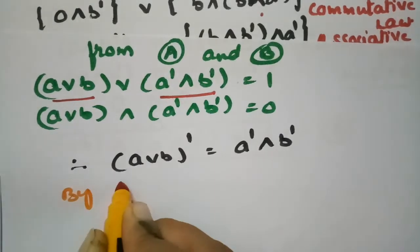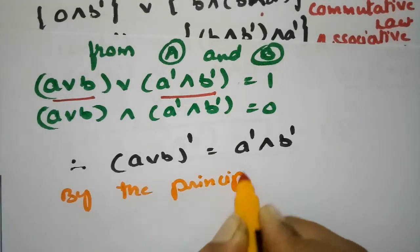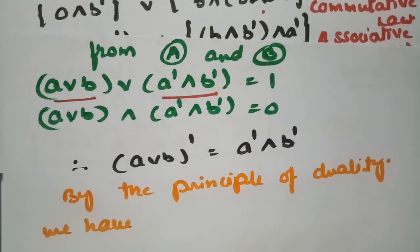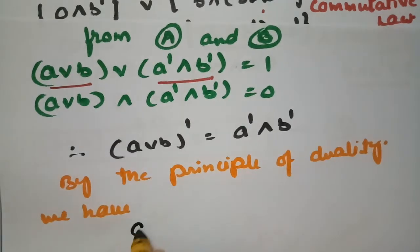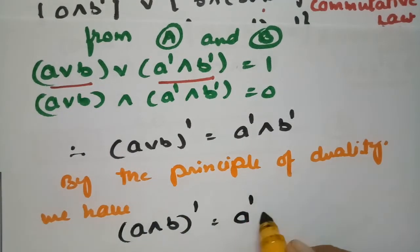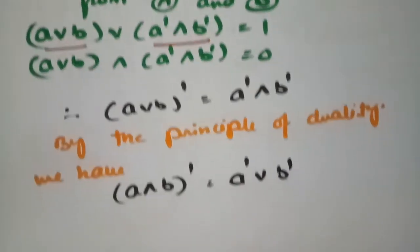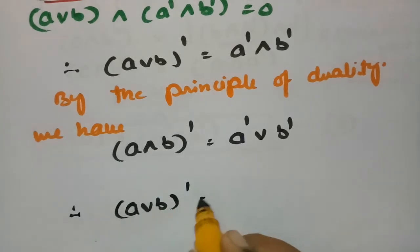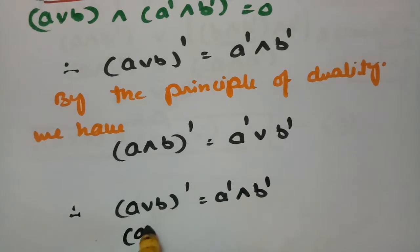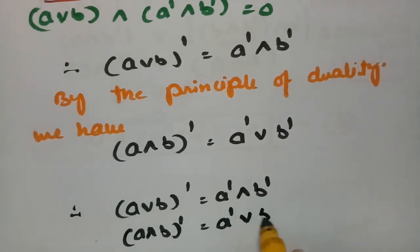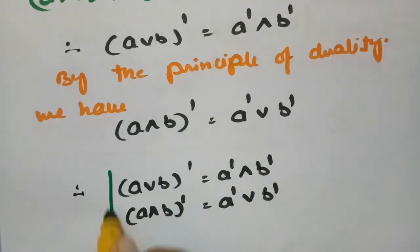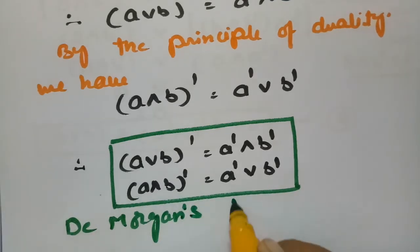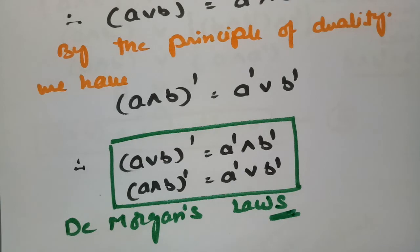By the principle of duality, we can interchange join (∨) with meet (∧) and meet with join. Therefore, (A∧B)' = A'∨B'. From results (1) and (2): (A∨B)' = A'∧B' and (A∧B)' = A'∨B'. These are De Morgan's laws.